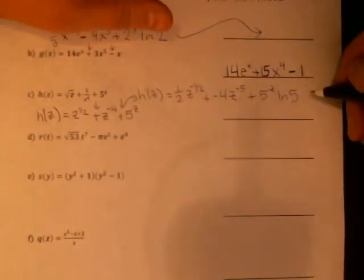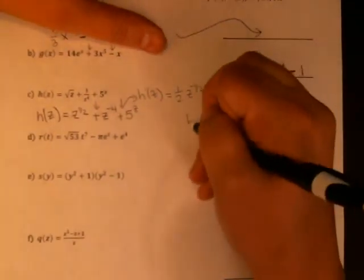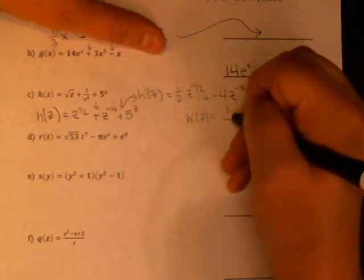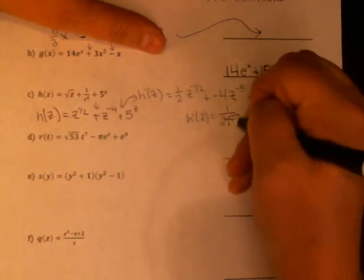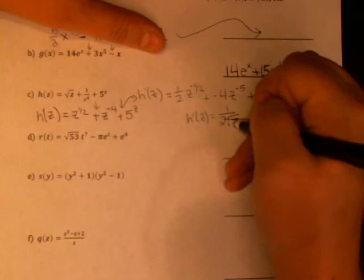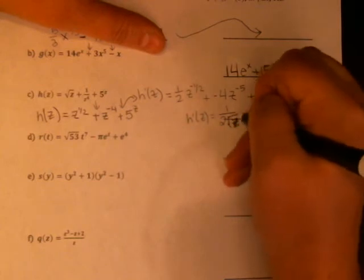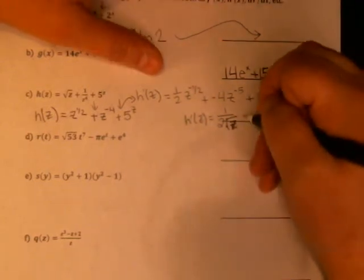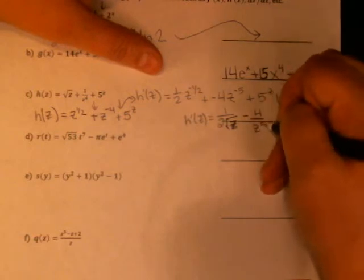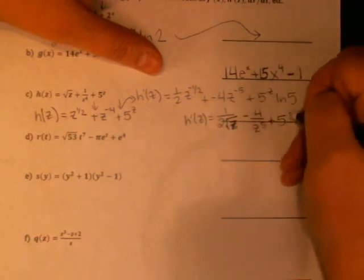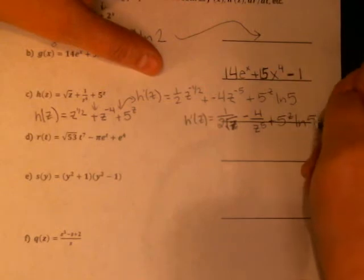So if I were going to rewrite that, h prime of z is equal to one over two times the square root of z. I don't care if you leave that z to the one half or if you rewrite it as the square root, either is fine. Minus four over z to the fifth plus 5^z times the natural log of five.